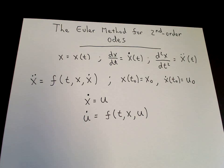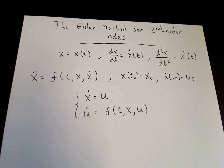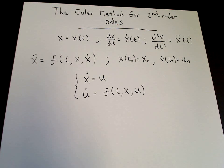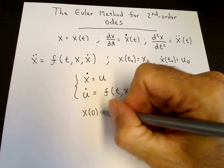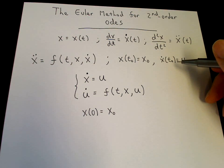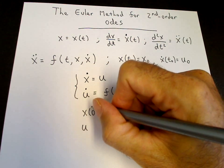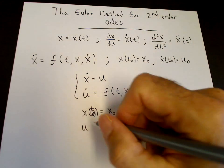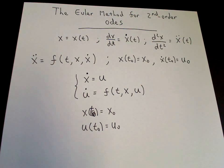Okay, so we end up with this system of two first-order equations which are completely equivalent to the one second-order equation. And we have the two initial conditions, which are x of t naught equals x naught and the initial condition on x dot becomes an initial condition on u.